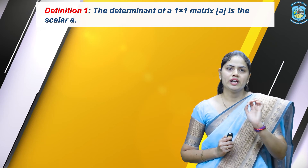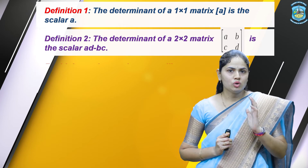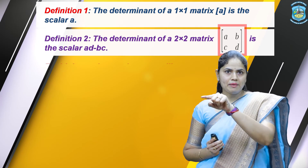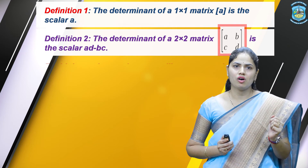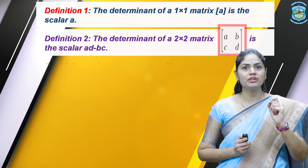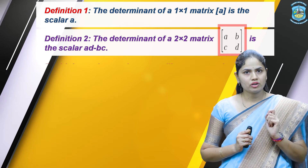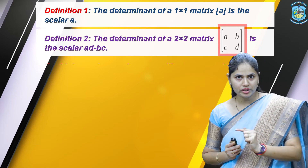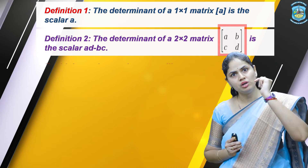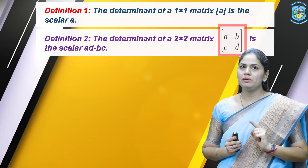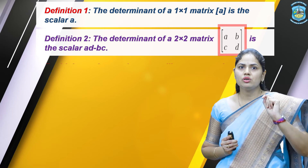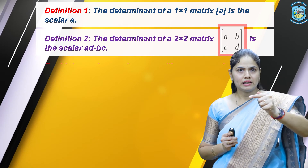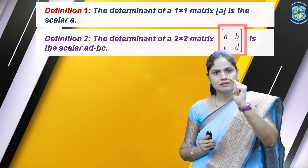The next definition is for a matrix of order 2 by 2. The determinant of a 2 by 2 matrix with elements A, B, C, D is found by cross multiplication. You put two arrows: one from upward to downward, and another from downward to upward. The downward-to-upward arrow carries a negative sign. So the result of the scalar is A·D minus B·C.